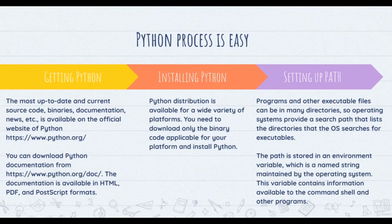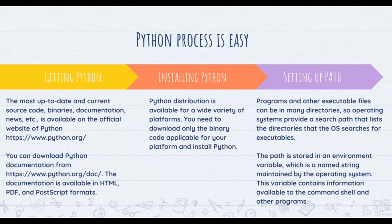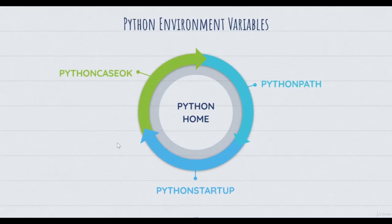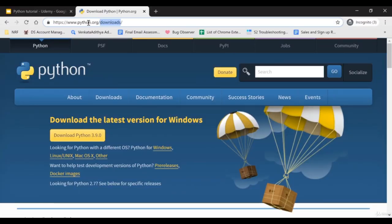Now we'll talk about the installation process of Python. The process is very easy — just three steps away. The first step is getting Python. The most up-to-date source code, binaries, and documentation are available at python.org, and documentation is at python.org/doc in HTML, PDF, and PostScript formats. Go to python.org/downloads — whatever version appears at the top is the latest, and that will help you install on your local machine.